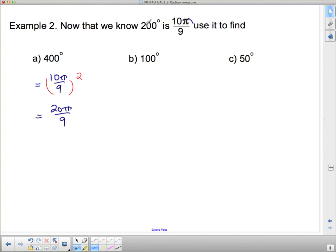100. Okay. 100, I have to divide 200 by 2 to get 100. So I simply have to divide 10 pi by 9 by 2. But of course, you guys know when you divide fractions, what you really do is multiply by the reciprocal.